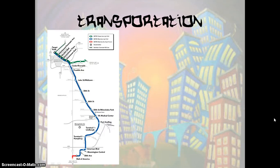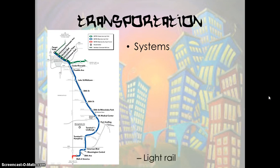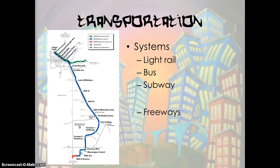Every city must manage its transportation needs, whether a small city of a few hundred people or a large one like the Twin Cities. Here we can see a map of the blue line light rail in the Minneapolis–St. Paul area, which runs from Target Field down to Mall of America, transporting thousands of people between the mall, the airport, and downtown each day. Transportation systems include light rail, bus, subway, and freeways to move people in and around the urban area.